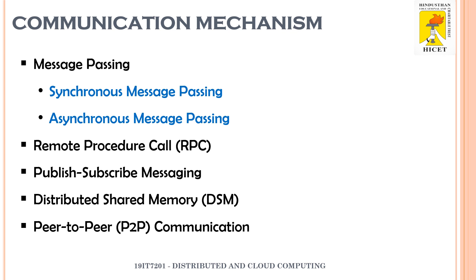The second type of communication mechanism in distributed systems is Remote Procedure Call, or RPC. RPC is a communication methodology where a node can invoke a procedure or method on a remote server as if it were a local procedure call. Here, abstraction takes place: the RPC sends a request message to the server, the server processes the request, and sends the response back to the client.